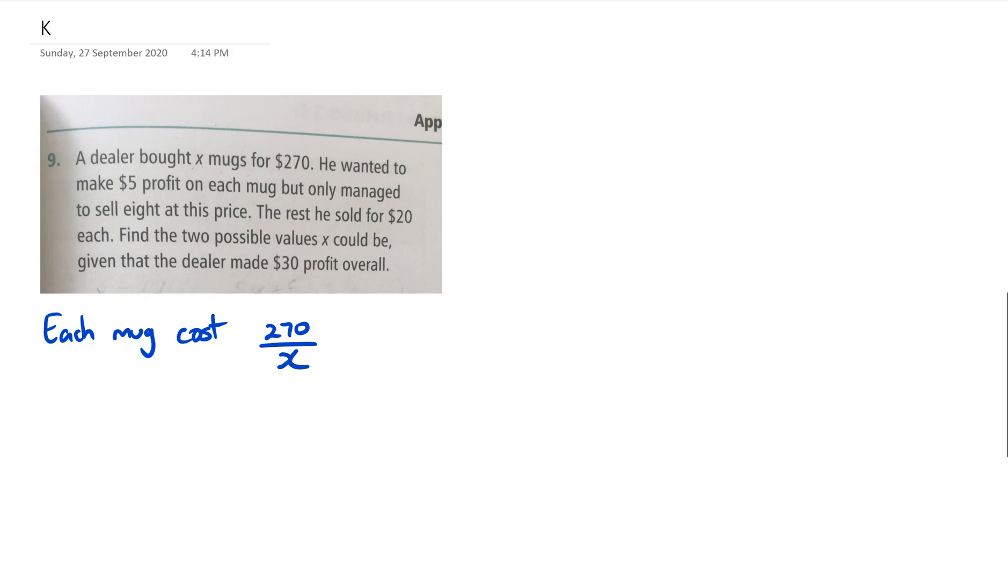The second point is that he wanted to make $5 profit on each mug. That means each mug costs 270 over X, and he wants to make $5 profit, so this can be written as 270/X plus 5. This is what he's selling the mugs for.